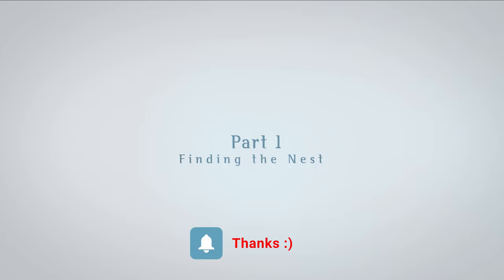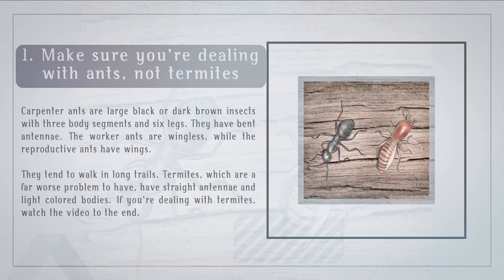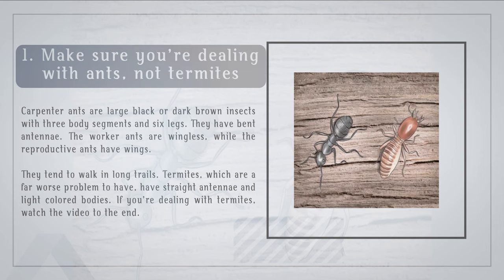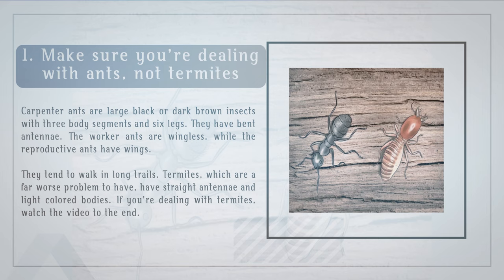Part 1: Finding the Nest. Step 1: Make sure you're dealing with ants, not termites. Carpenter ants are large black or dark brown insects with three body segments and six legs. They have bent antennae. The worker ants are wingless, while the reproductive ants have wings. They tend to walk in long trails. Termites, which are a far worse problem to have, have straight antennae and light-colored bodies.